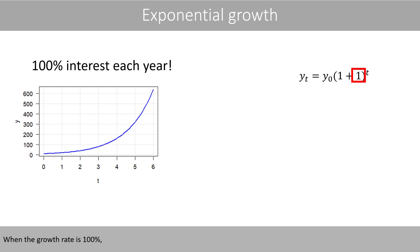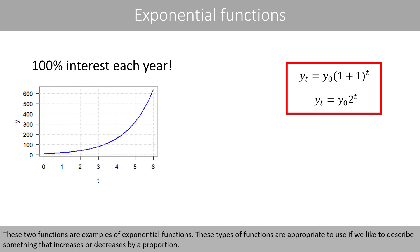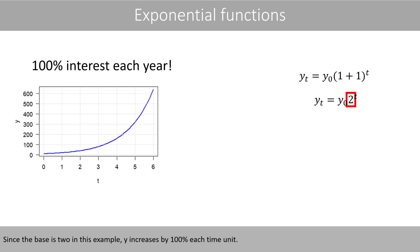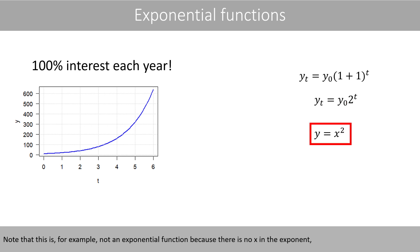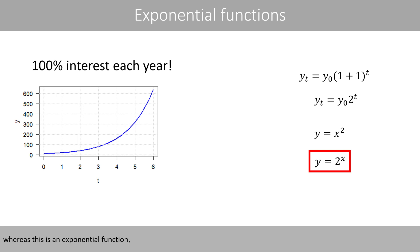When the growth rate is 100%, we have an exponential function with the base 2. These types of functions are appropriate to use if you like to describe something that increases or decreases by proportion. Since the base is 2 in this example, Y increases by 100% each time unit. Note that, for example, this is not an exponential function because there is no X in the exponent.